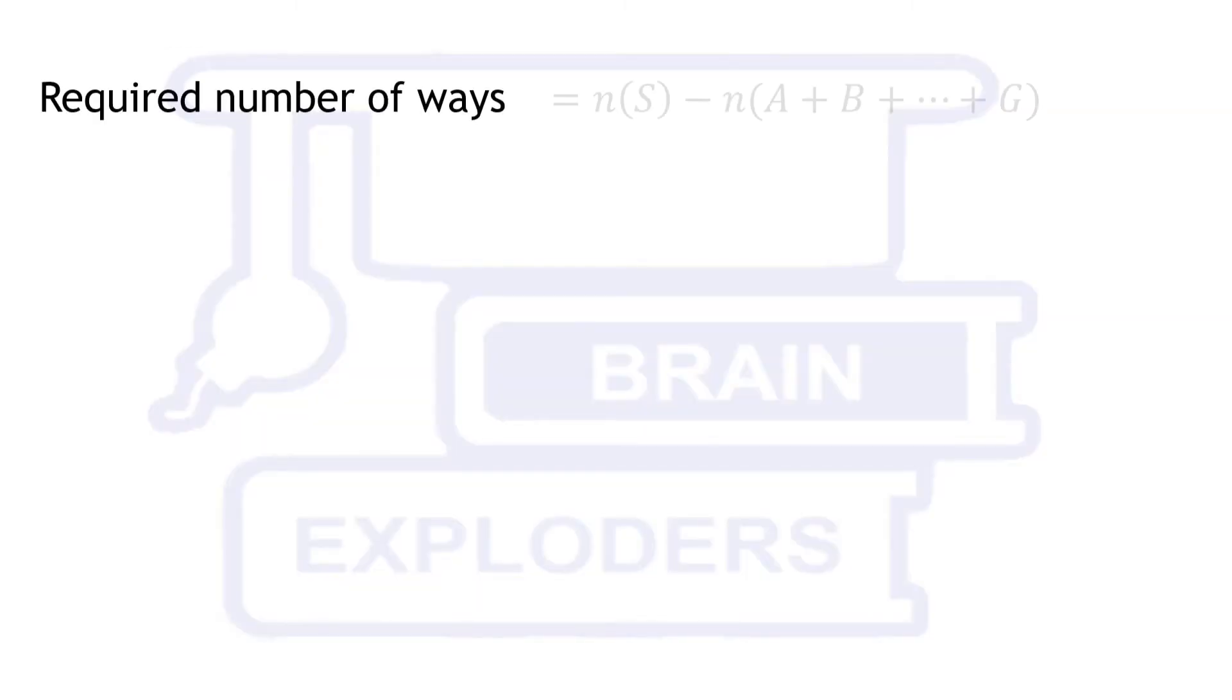Therefore, required number of ways are equal to cardinality of set S minus cardinality of sum of other sets. Number of elements in S can be simply calculated as 7 factorial.